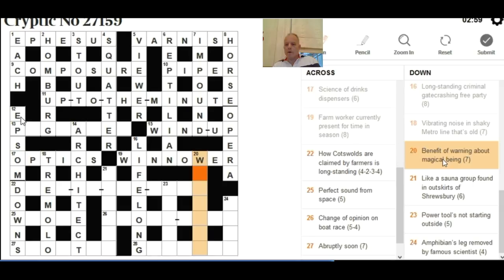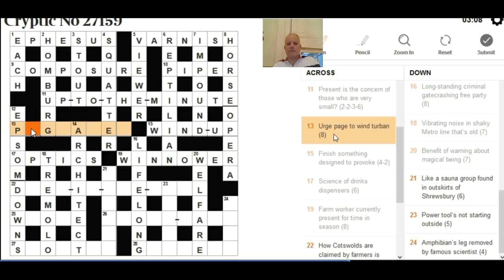There would be no more downs with any crossing letters solved, so back to the acrosses. Back to thirteen across - I think this is the hardest item of vocabulary in the puzzle. 'Urge page to wind turban' - given the letters that have now appeared, P-G-A-E, the same letters in PAGE, suddenly I'm realizing we could be looking at another anagram and 'to wind' could be an anagram indicator. 'Urge page' is eight letters. Maybe even if you don't know the word you could see it from that, but luckily I've read the Flashman books to know that PUGGARY, which has various spellings but that's one of them, is a form of turban.